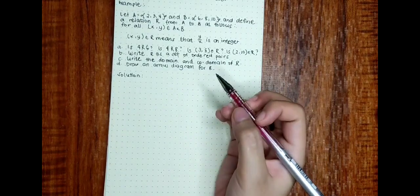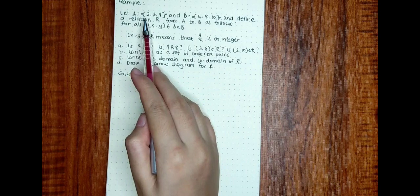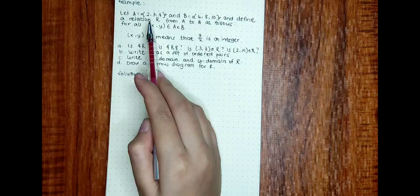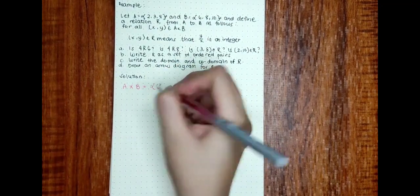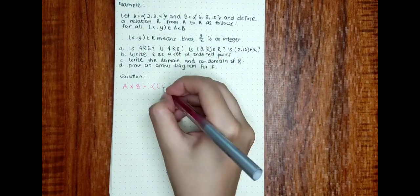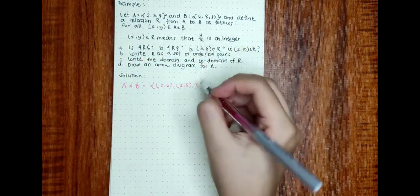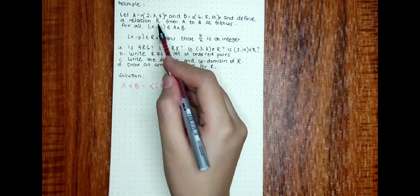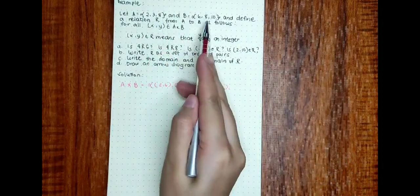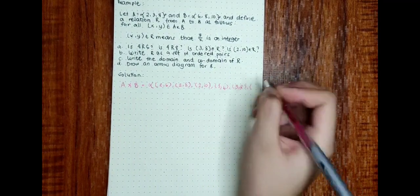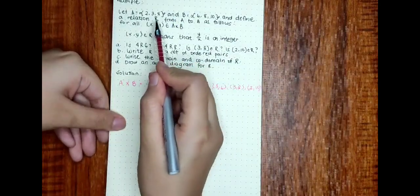Here is how we are going to answer it. First, let's write the set of ordered pairs of A×B. We are going to combine set A and set B in a distributing manner. So A×B equals {(2,6), (2,8), (2,10), (3,6), (3,8), (3,10), (4,6), ...}.